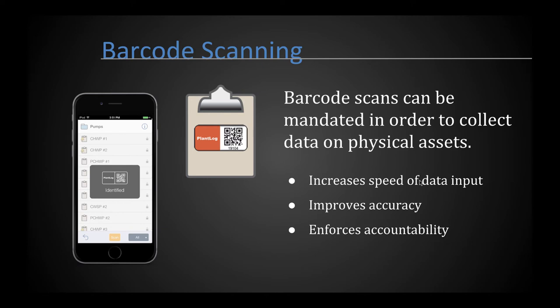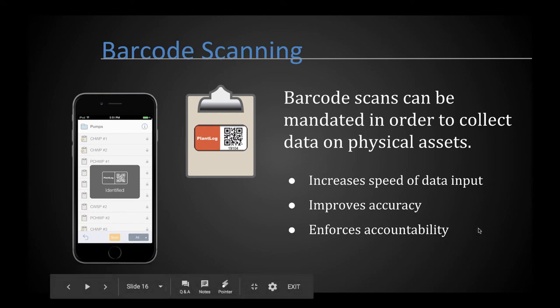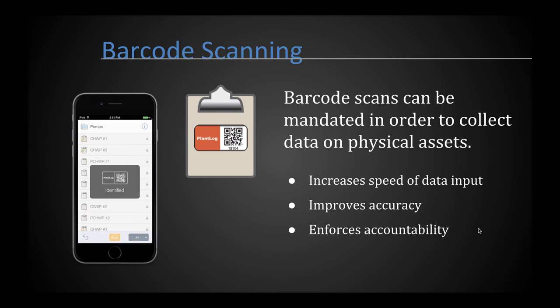Barcoding provides increased speed and accuracy of data input. In a paper-based system it is easy to fill out a form for chiller number 2 when actually standing in front of chiller number 1, missing the small number at the top. Barcoding removes those errors. It also provides accountability, ensuring data collected on a piece of equipment was actually performed in front of that equipment.